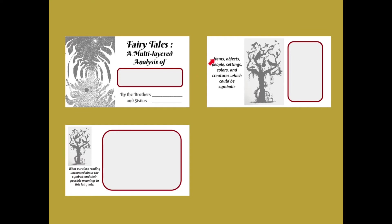All you have are two slides that deal with symbols and archetypes. The first slide is some kind of identification of items, objects, people, settings, colors, creatures which could be symbolic or archetypal — it almost suggests that you make some kind of list. The second is what a close reading uncovered about symbols and their possible meanings in fairy tales. And that's really all you have to go on.